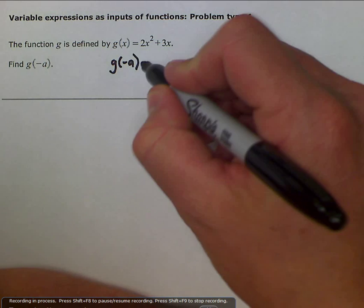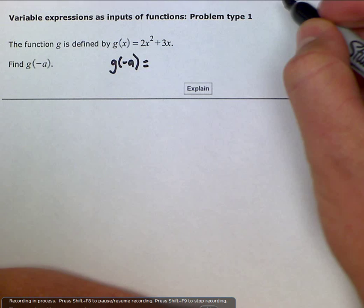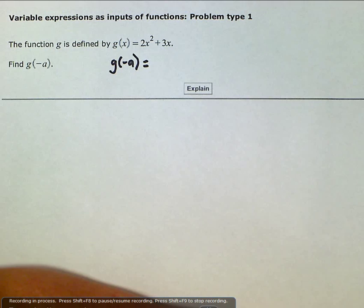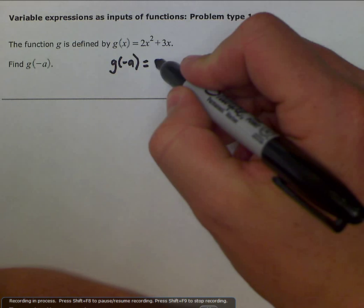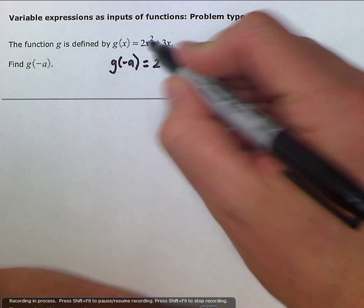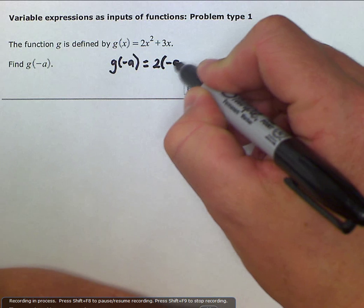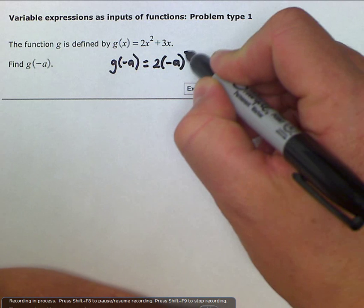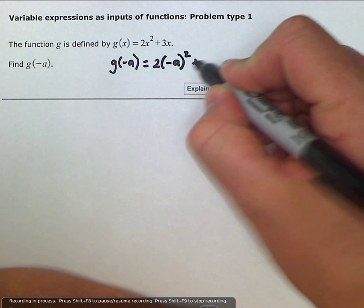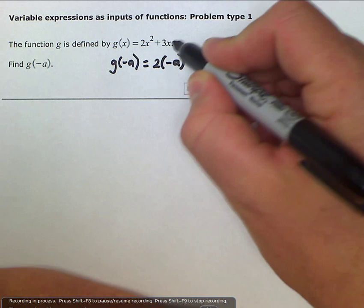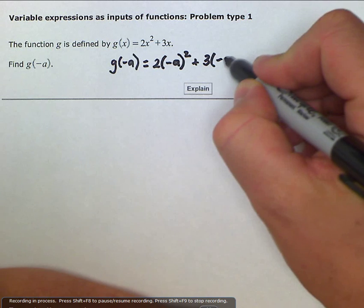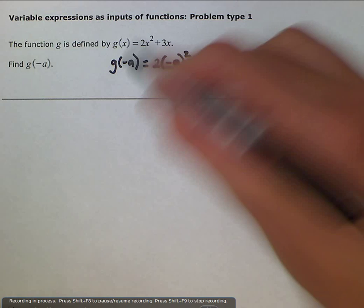And so we could rewrite this as, and remember anytime you're inputting make sure that you use parentheses. So 2 times our unknown which is x we replace with negative a and that is squared plus 3 times instead of x we replace it with negative a. So we've just taken the x's out and replaced it with negative a.